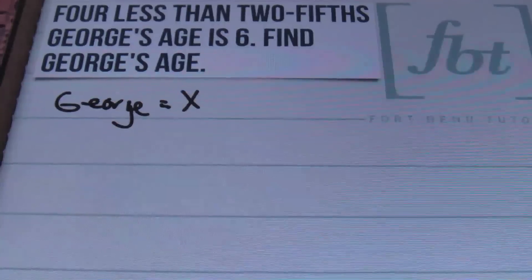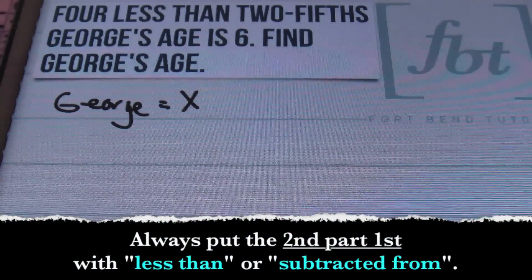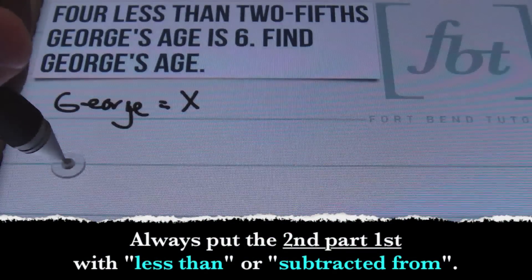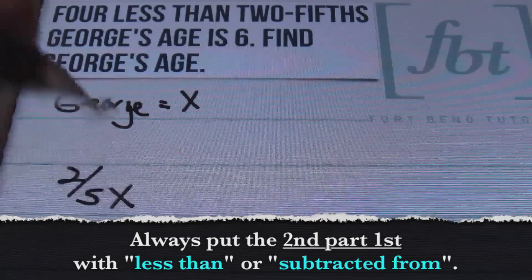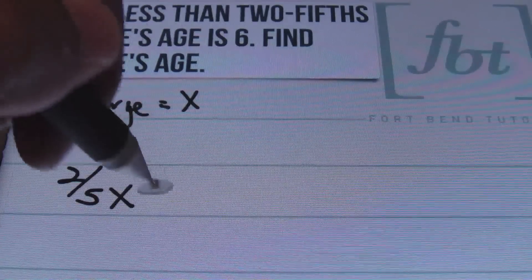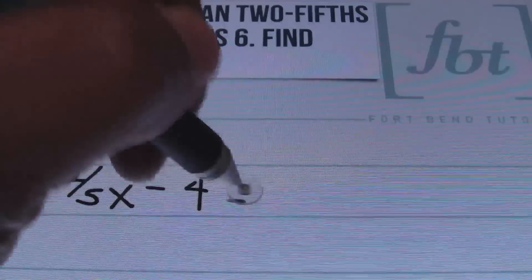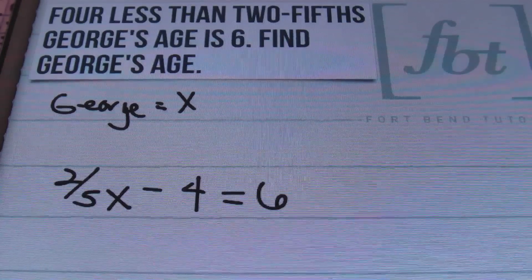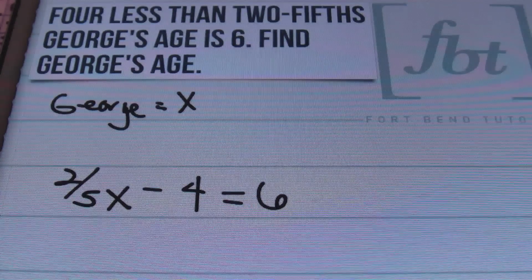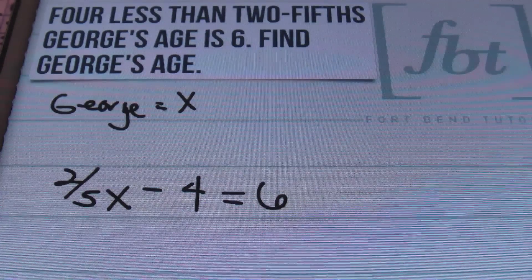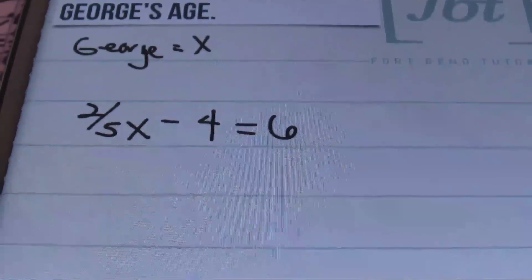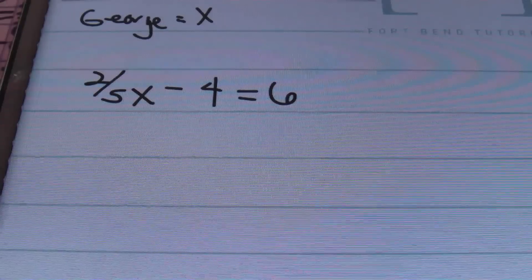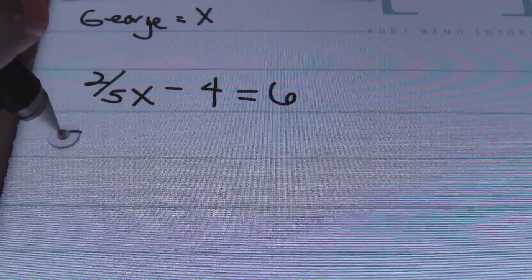Next, I'll translate this into an equation. It says four less than two-fifths of George's age is six. Anytime you see the phrase 'less than' or 'subtracted from,' you always put the second part first. So I'm going to start by placing two-fifths of George's age minus four, and that has to equal six. So here's my equation: two-fifths x minus four equals six.